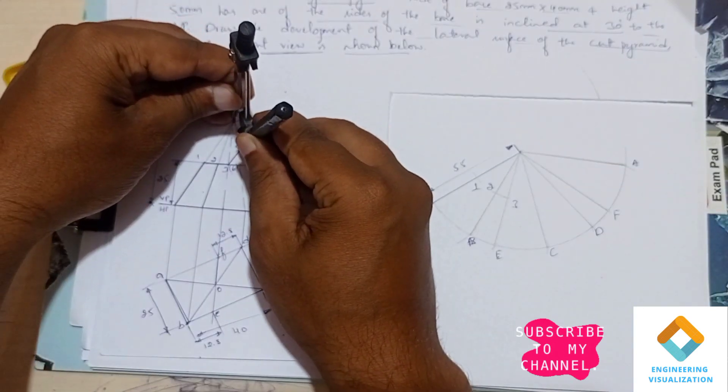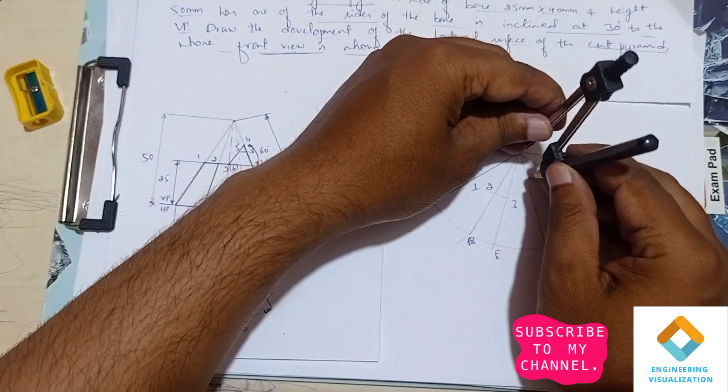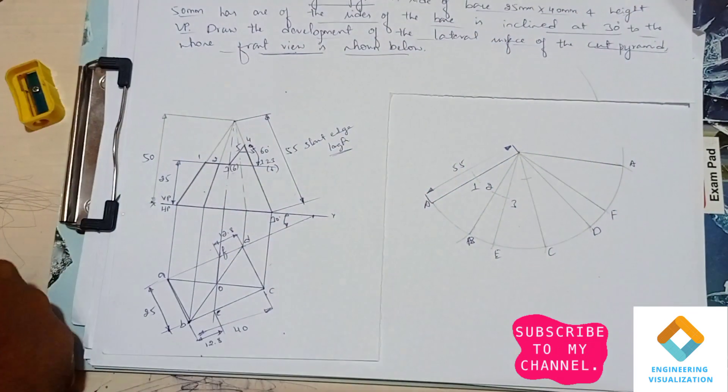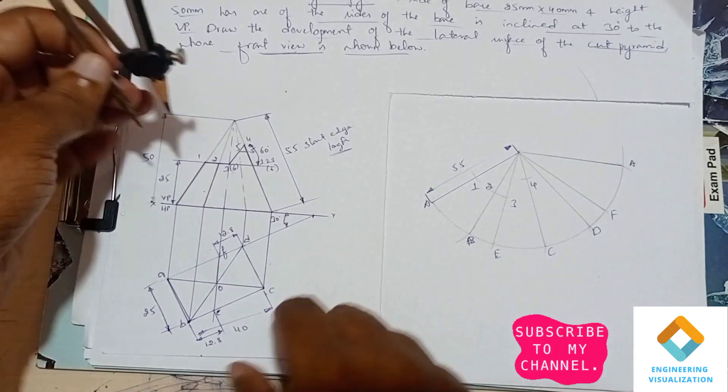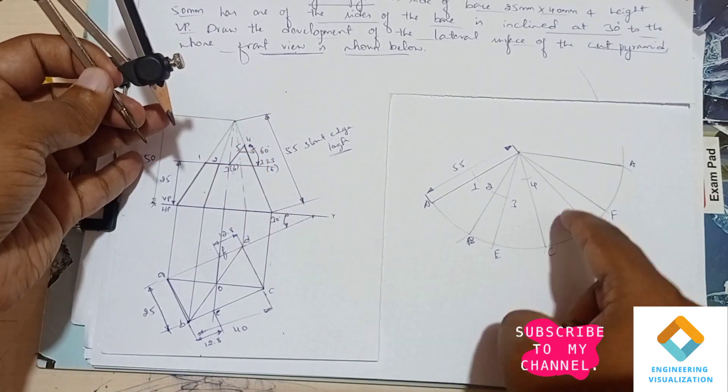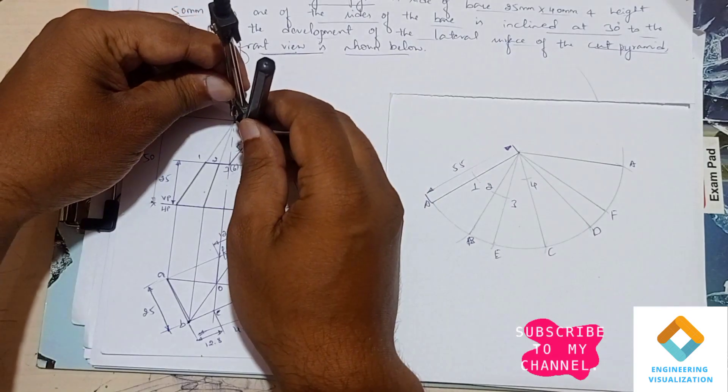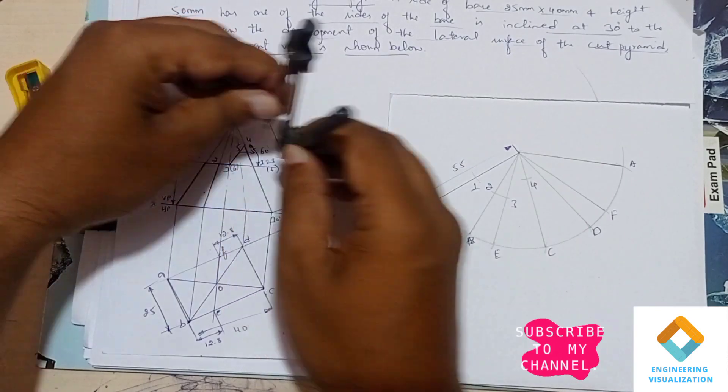Now point number four. Point number four is lying on the slanted edge of C. Measure that length and cut the arc, that is your point number four. Now point number five. Point number five is falling on the vertical edge of D. Measure the length and cut the arc, that is your point number five.